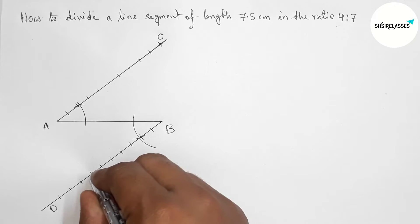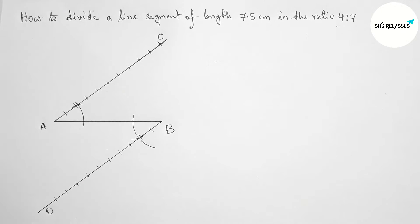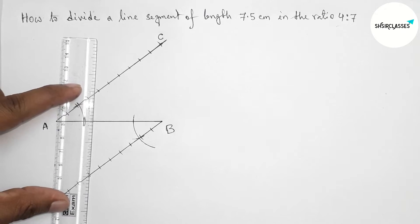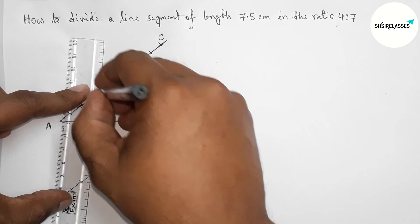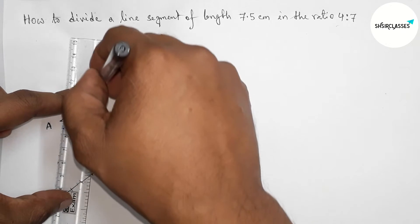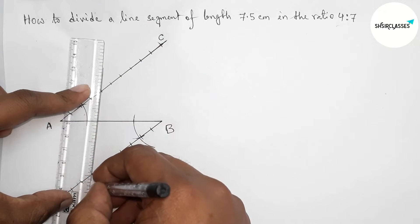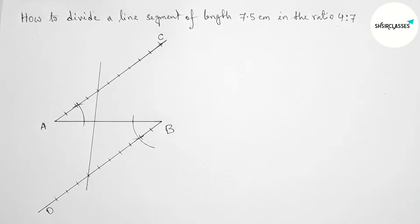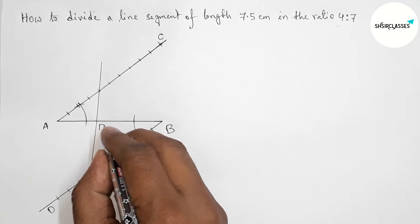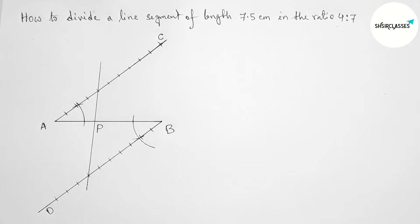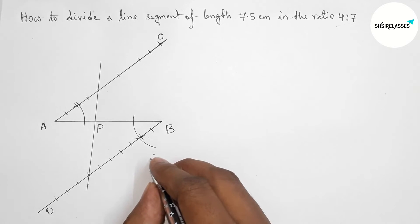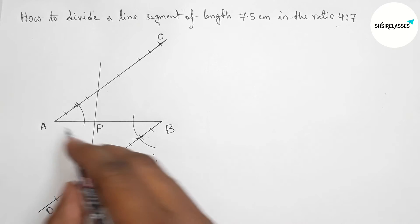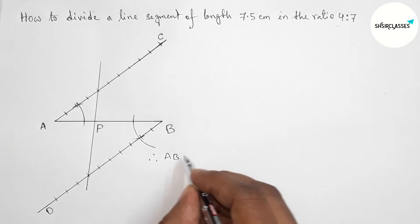Since the ratio is 4 is to 7, we count to the 4th point on AC and the 4th point on BD. Both 4th points are now marked. Joining both 4th points — this line divides line AB at point P in the ratio of 4 is to 7.